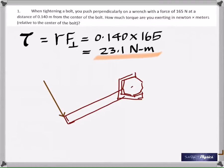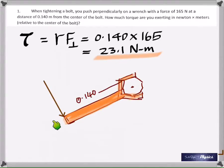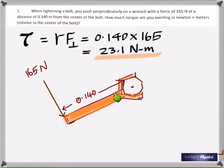So that is the bolt and that's the wrench. You are applying the force at right angles to the distance. The force of 165 Newtons is perpendicular to the distance from the center of the bolt. So the answer is 23.1 Newton meters.